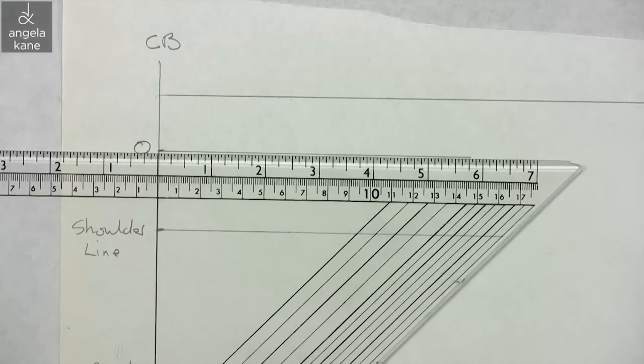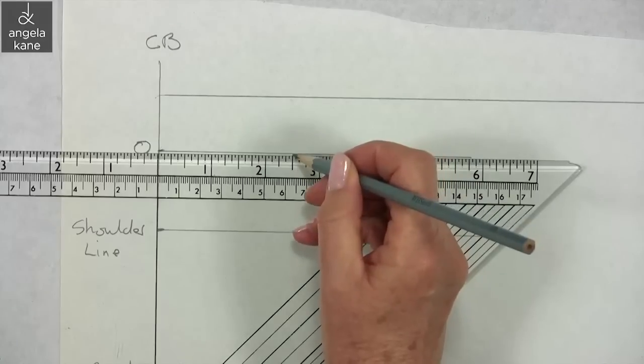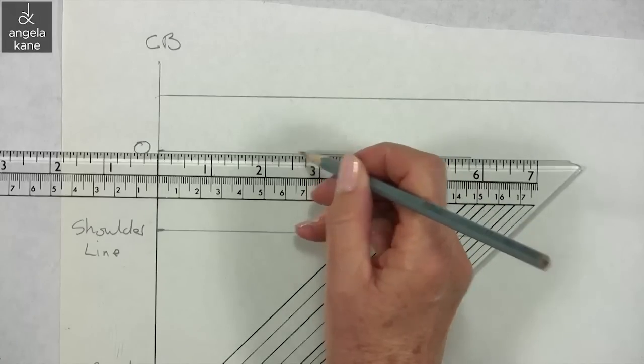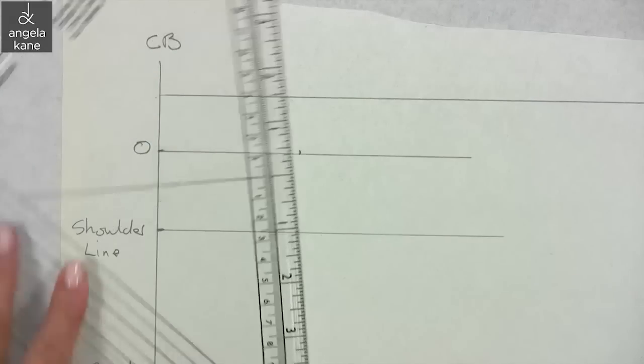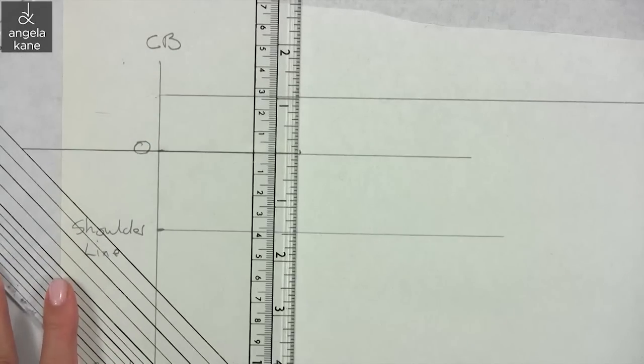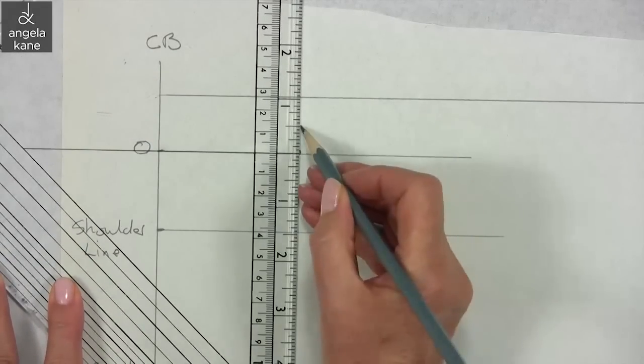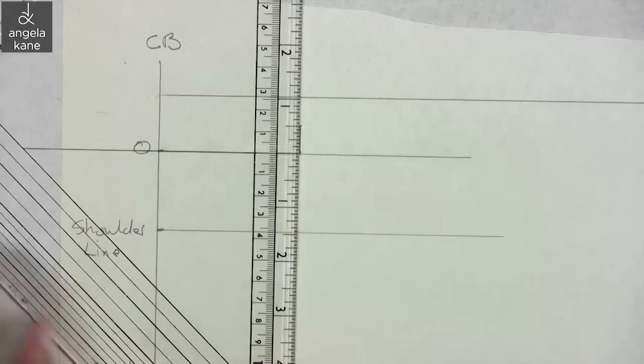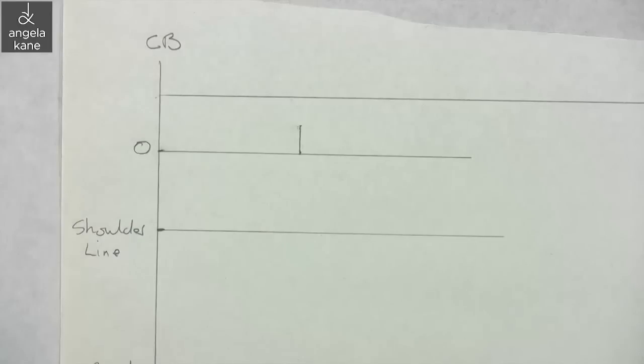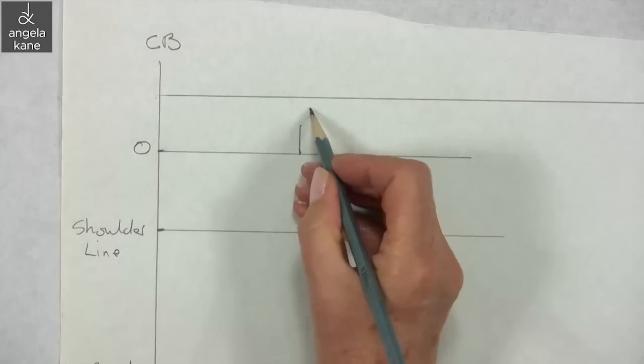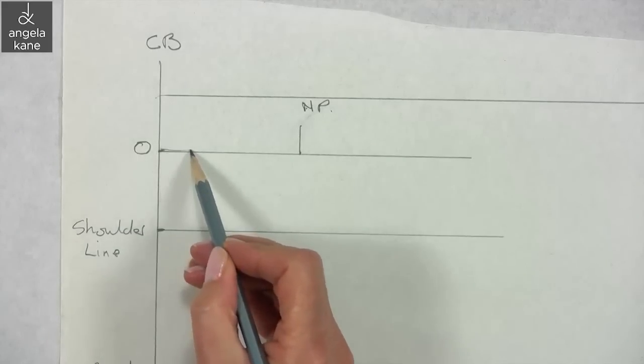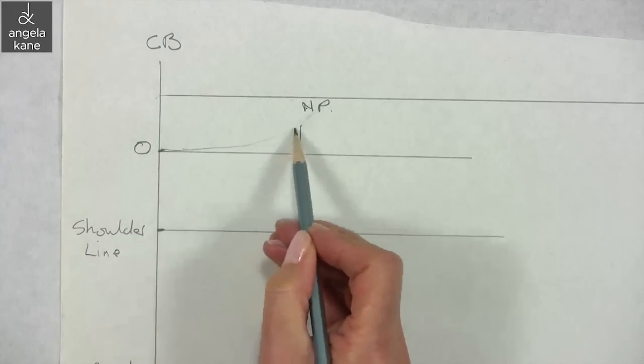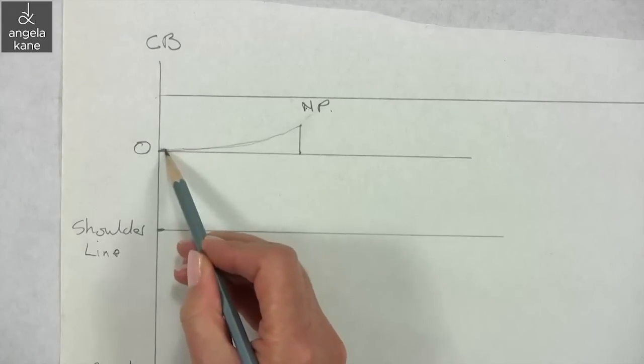The neck width is also graded according to bust size with the addition of an eighth of an inch. Refer to the PDF for variations. Measure up from this point a half an inch for all sizes and add the label NP for neck point. Join NP and O with a nice curve for the back neckline.